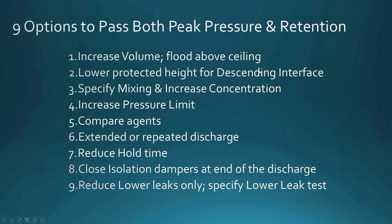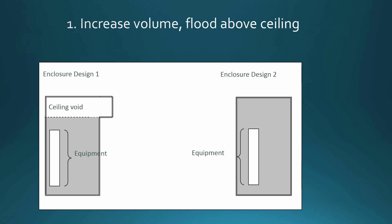Here are all nine options. There are two ways of looking at hold time: the descending interface model and the continuous mixing model. The first two options — increasing volume by flooding above the ceiling and lowering the protected height — are mostly descending interface related. The third is continuous mixing, which is very important to understand. Number one: increase the volume by flooding above the ceiling. The US never does this; Europe always does it — and I think Europe is right. More agent in the room means better protection, it enables a leakier enclosure which allows for pressure relief venting, and gives a longer retention time.